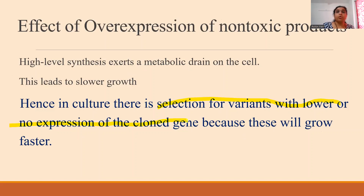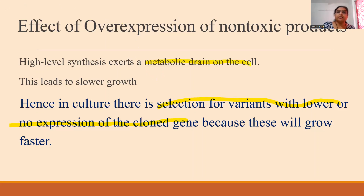Why does this happen even for a non-toxic product? As the product is overexpressing, all the cellular system is utilized for production of the cloned gene product, causing metabolic drain in the cell — the normal metabolism is lowered down. There will be slow growth; for example, if E. coli normally doubles in 20 minutes, it may take 40 minutes instead.